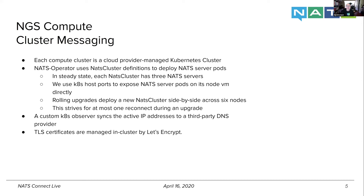We do rolling upgrades a little differently. We still use the NATS operator, but we deploy two NATS clusters side by side. The old cluster is running; we deploy a new NATS cluster pointing to the new NATS server pod. The new cluster gets a temporary route to the old cluster so they become a six-node cluster. They do their state sharing, and then we put the old NATS cluster into lame duck mode, which migrates client connections to the new NATS cluster.